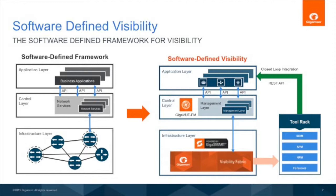More importantly, this visibility fabric is feeding tools — could be a SIEM tool, APM, NPM, or forensics tool. But what if these tools can also program the visibility fabric using closed-loop integration with the same REST APIs? You get a dual function: a set of business applications written by the customer, or the tool vendor itself could write business applications to program the visibility fabric. This is where JDSU will talk about use cases where they will program the visibility fabric.